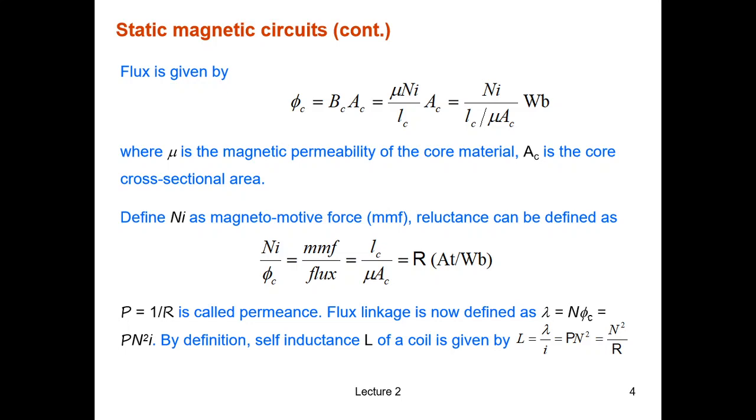Flux linkage is defined as λ equals N times φc. And finally, we define self-inductance L of a coil as the ratio between the flux linkage and the current that created that flux.